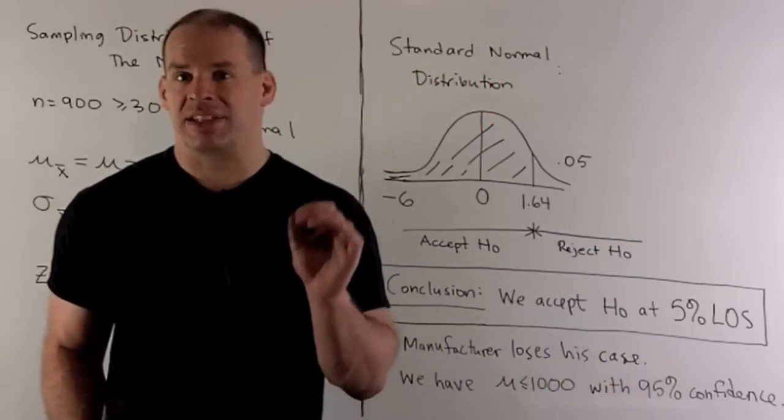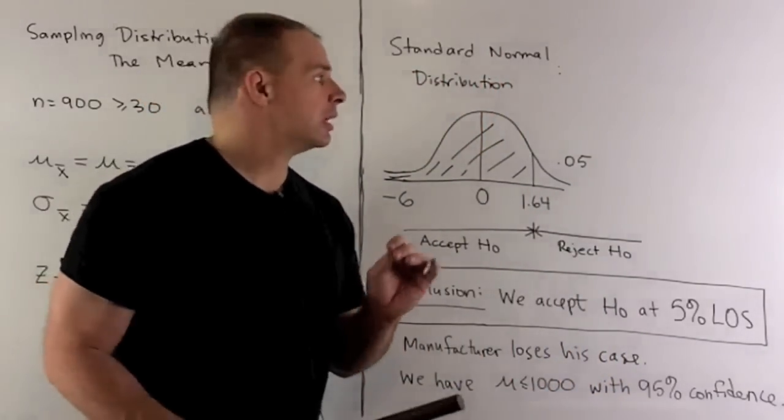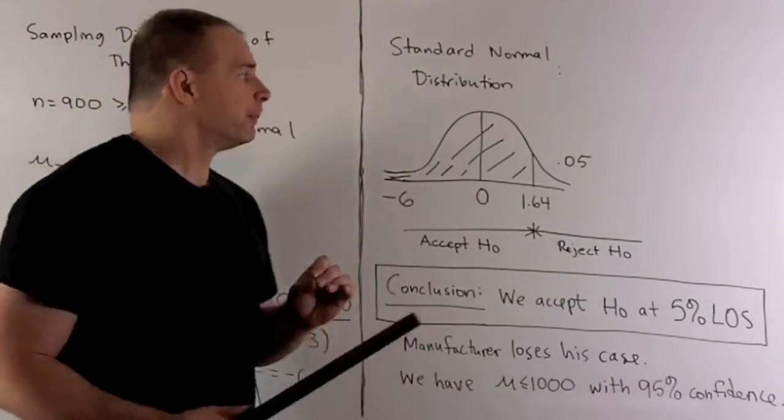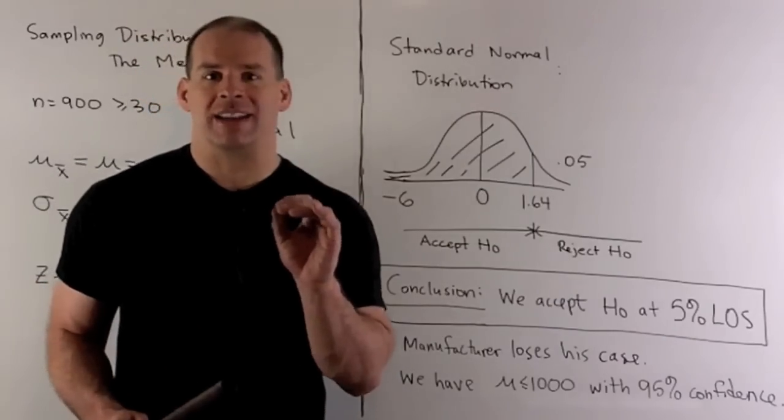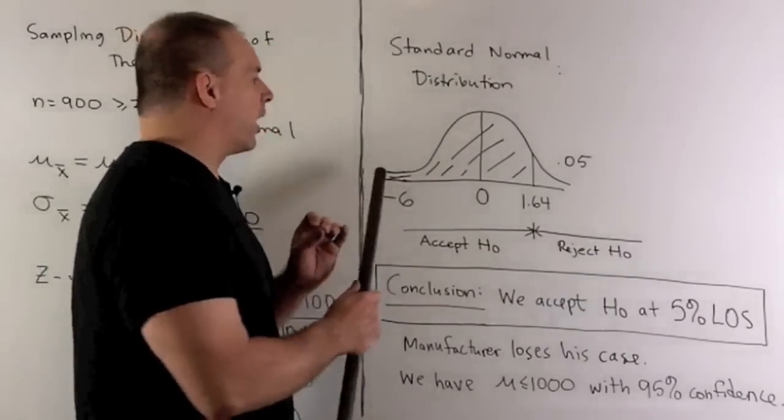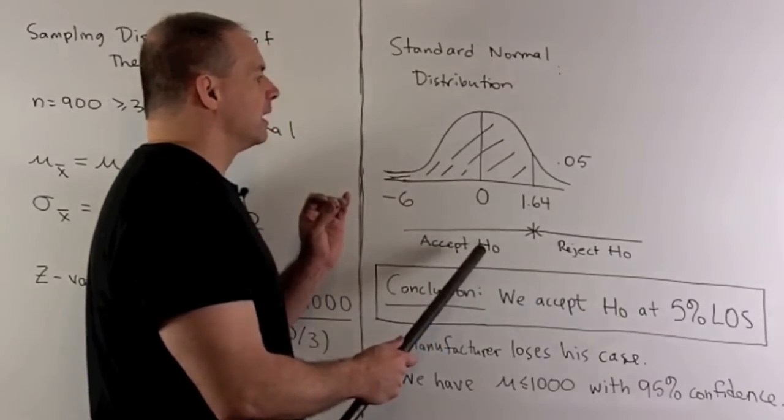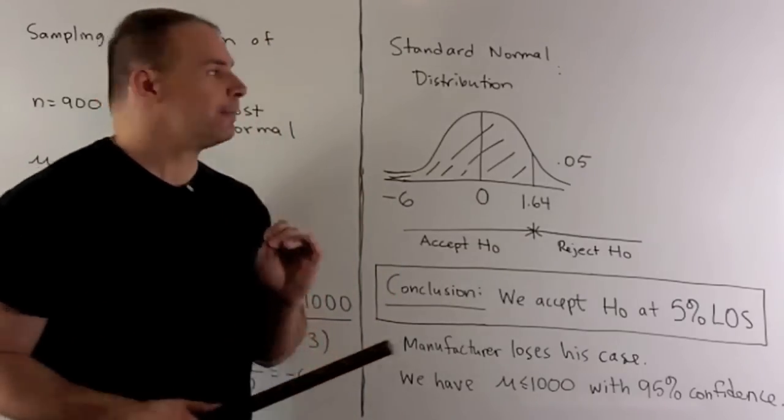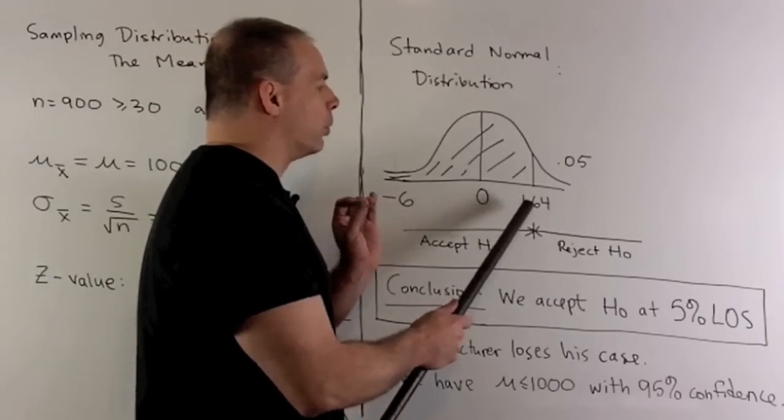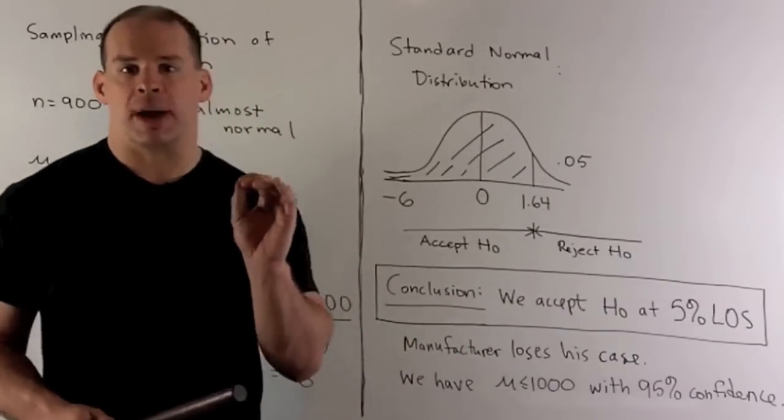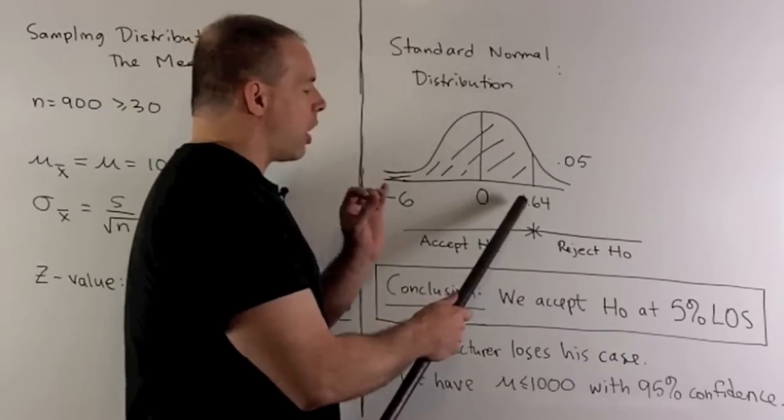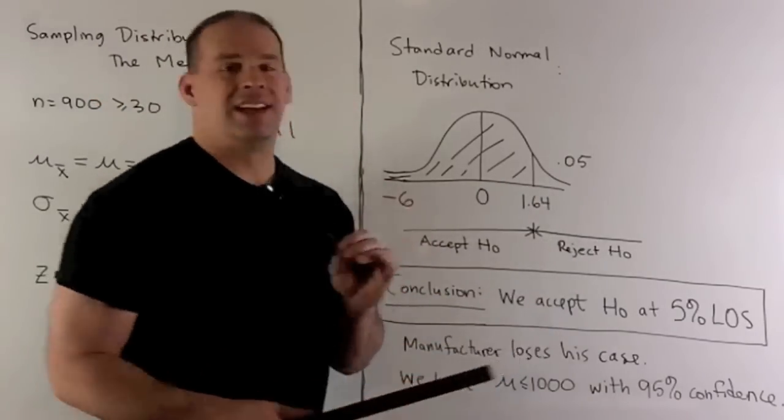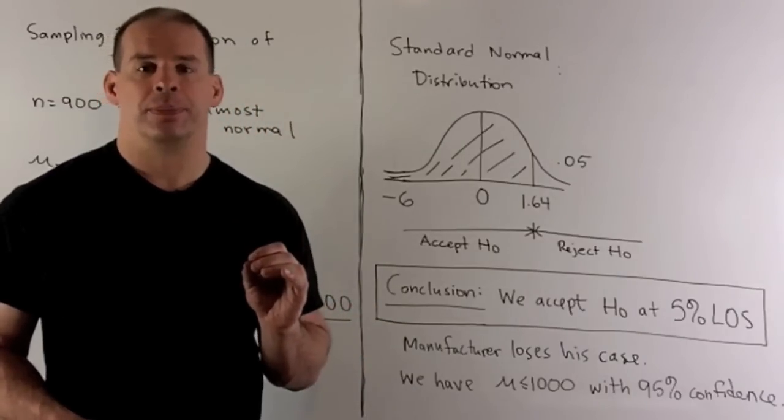Next step: set up the acceptance and rejection regions. We're going to have standard normal distribution. The idea is going to be we want a 95% level of confidence. So that means I want the area that we're testing for the acceptance region to be 0.95. Now for the standard normal distribution, the way we get that is going to have a z value of 1.64. So our acceptance region is going to be all z less than or equal to 1.64. Our rejection region is going to be z greater than 1.64.